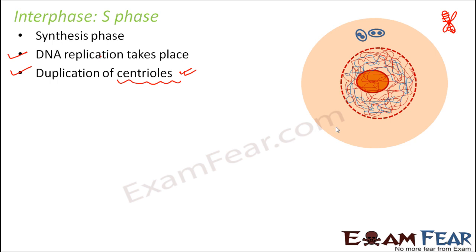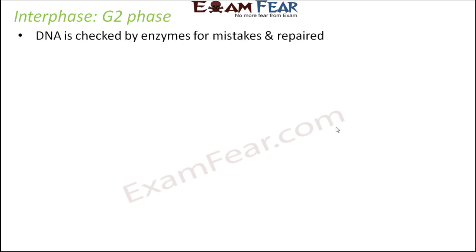It is very important that DNA duplication happens in a correct way. In order to check whether the DNA duplication happened in the right way, we have the next phase — the G2 phase or the second gap phase. Here, the DNA is checked by enzymes for mistakes and then repaired.